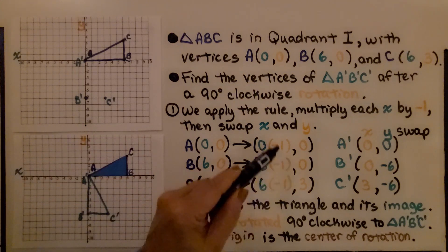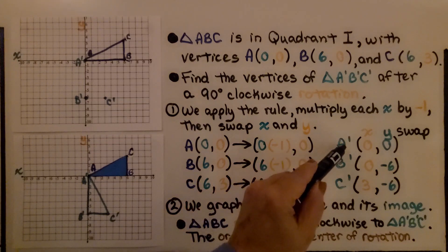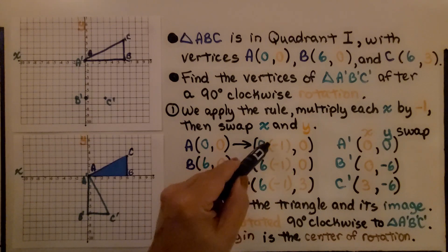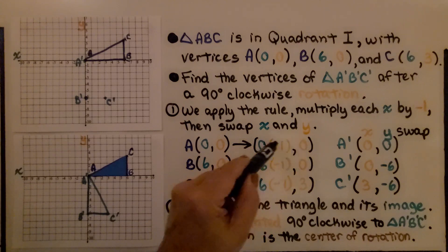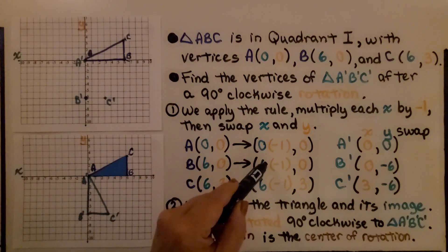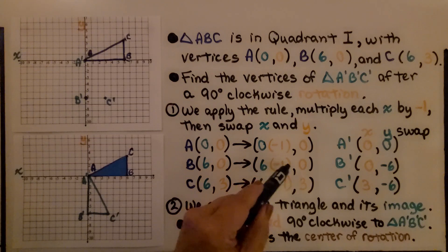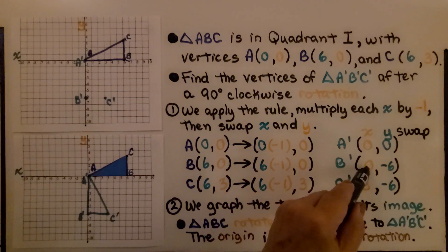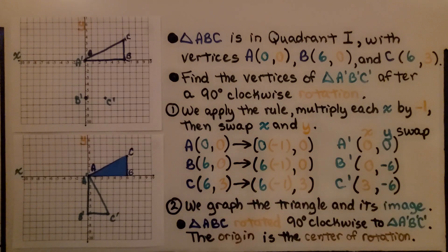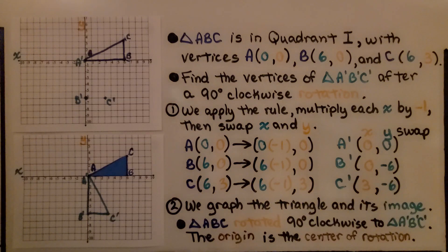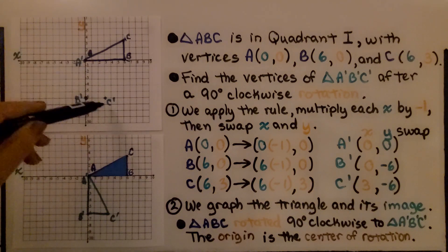We multiply each x value by negative 1 and swap the x and y values. For A at (0, 0): 0 times negative 1 is 0, and since this is the origin it stays (0, 0). For B at (6, 0): 6 times negative 1 is negative 6; swapping gives B' at (0, negative 6). For C at (6, 3): 6 times negative 1 is negative 6, then swapping gives C' at (3, negative 6).